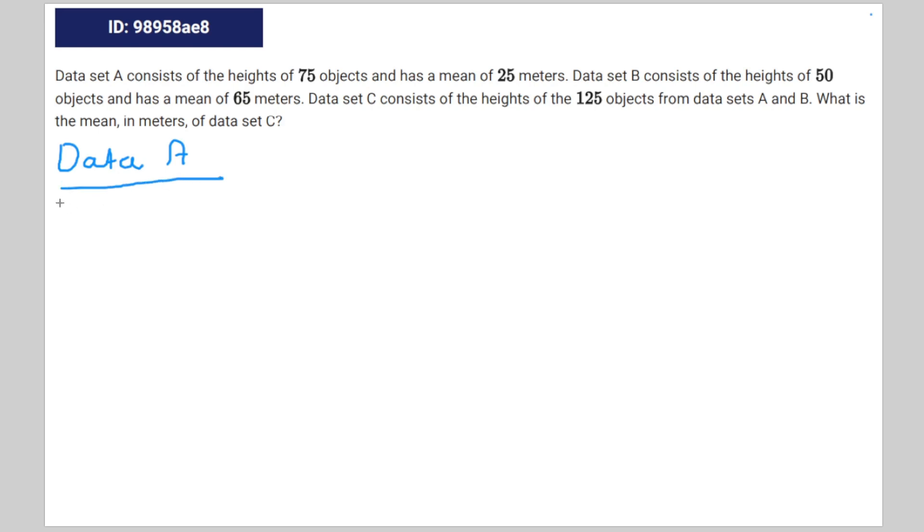Take the number of objects, in this case 75, and multiply it by its average. In this case, 25. That's going to give you 1875, the total height.